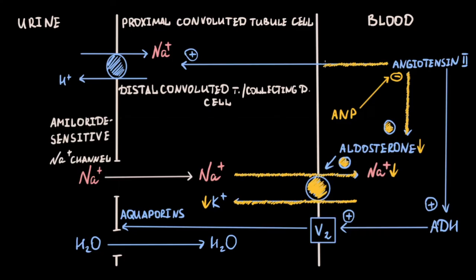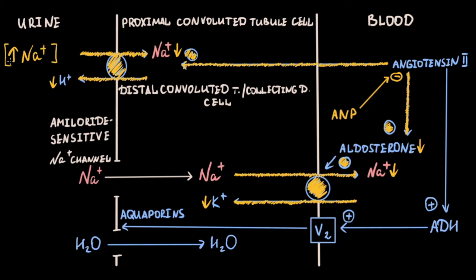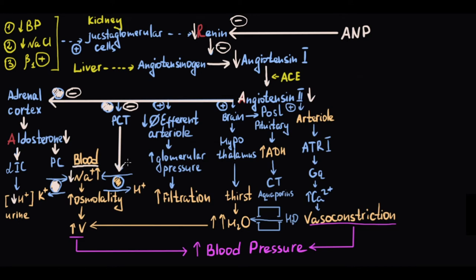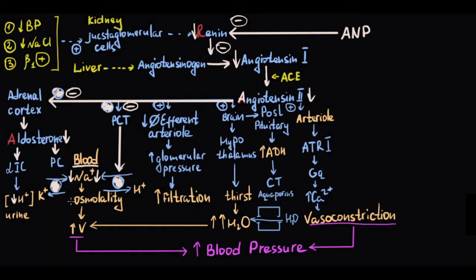ANP also inhibits angiotensin-stimulated sodium reabsorption in the proximal convoluted tubule through inhibition of the sodium-hydrogen exchanger, which also leads to decreasing sodium reabsorption and increasing sodium concentration in the urine. Both of these effects decrease sodium concentration in the blood, thereby decreasing blood osmolality and leading to a reduction in blood volume.